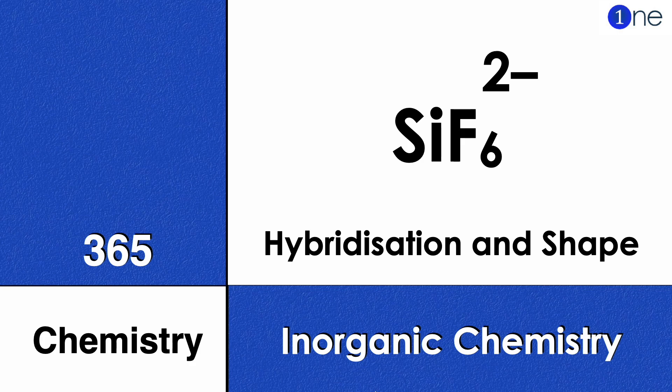Welcome to One Chemistry. This is the 365 Chemistry series, inorganic chemistry questions. Here we're given silicon hexafluoride, which is a 2-minus anion. You should find the hybridization and shape of it.